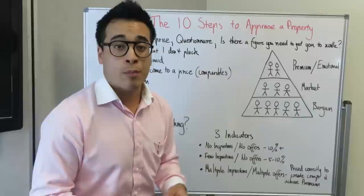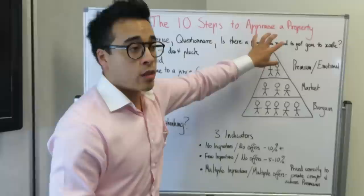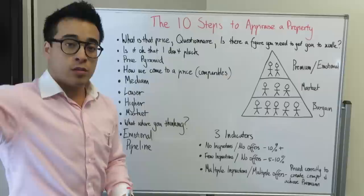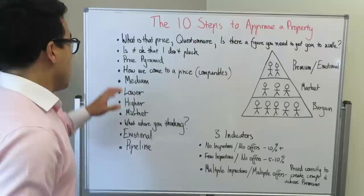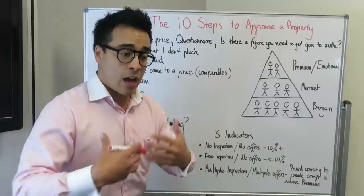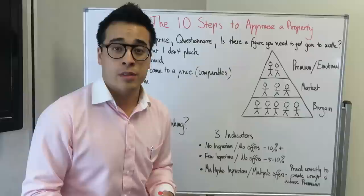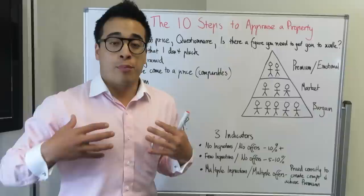Do the inspection of the house, come back, and we generally knock down price straight away — because if we're completely out on price, there's no point doing our full listing presentation. So we do price first. We ask: is it okay with you that I don't pluck a figure from the sky, and that we use facts and figures and information to appraise your house? You're pre-framing the fact that it's not so much you bringing up the price — you're using facts and figures to do that.